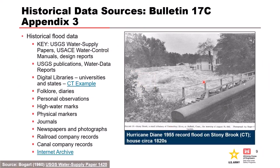Here is a listing of key sources to search for historical flood data. Digital libraries are your gateway to newspapers, photos, diaries, and a ton of other information. The Internet Archive is a good place to obtain history books from cities and towns, such as the 1958 Waterbury, Connecticut history book that was mentioned in our previous presentation.